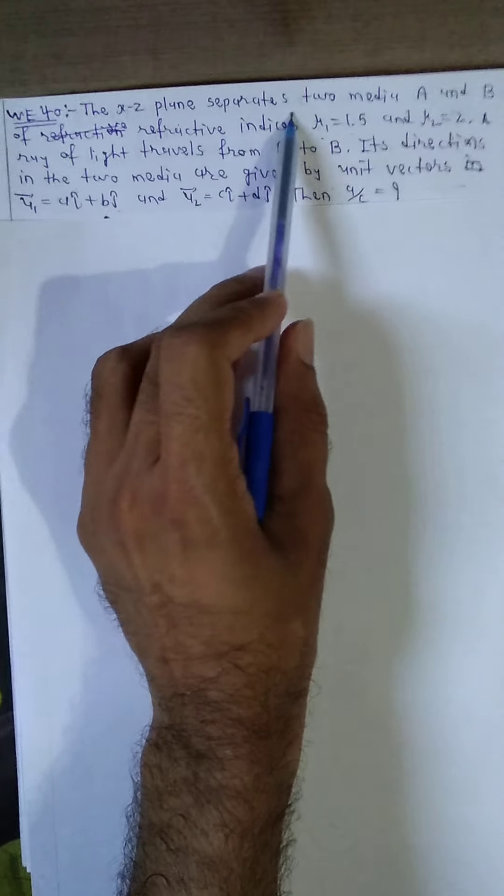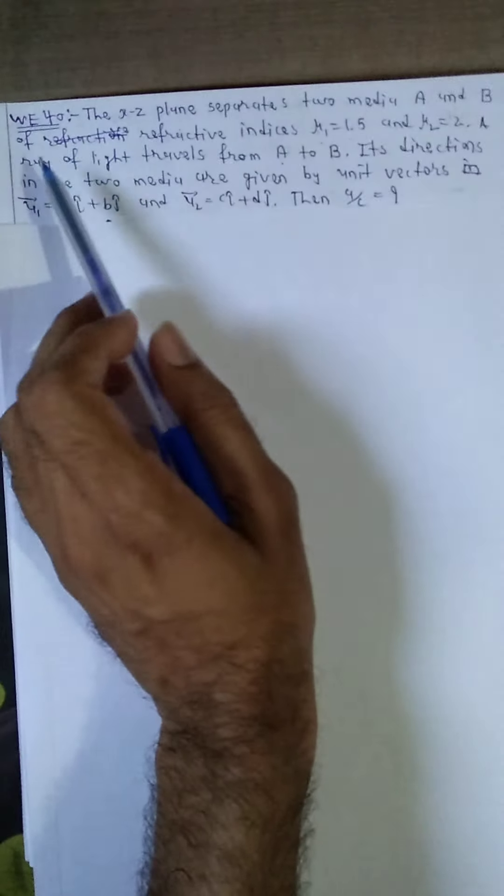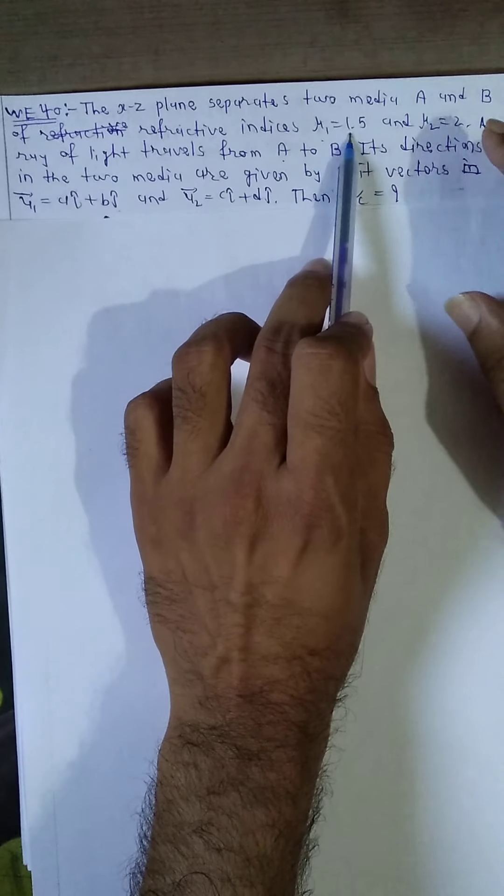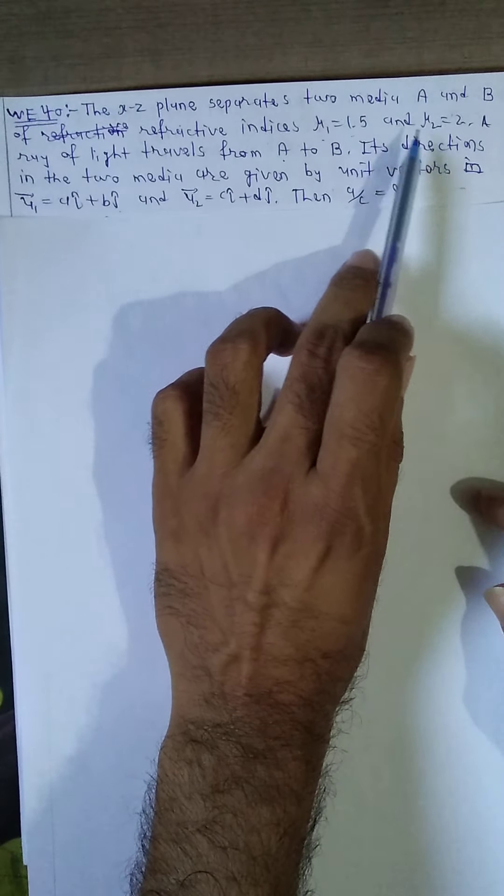The XZ plane separates two media A and B of refractive index mu1 equal to 1.5 and mu2 equal to 2.